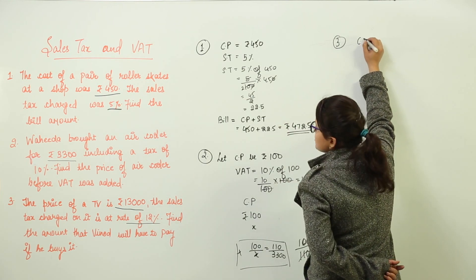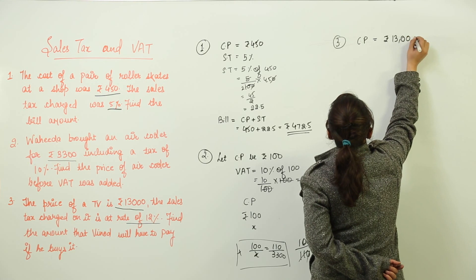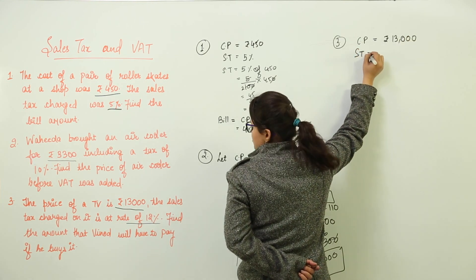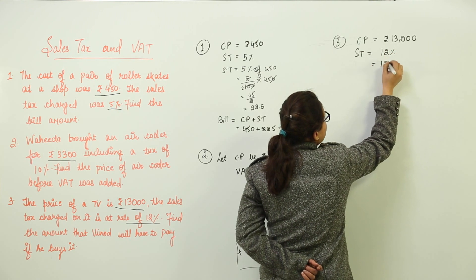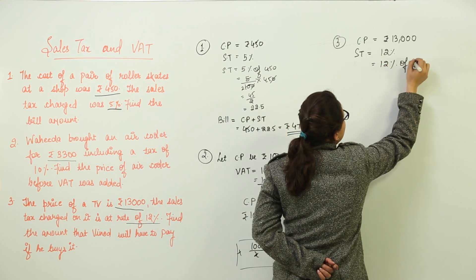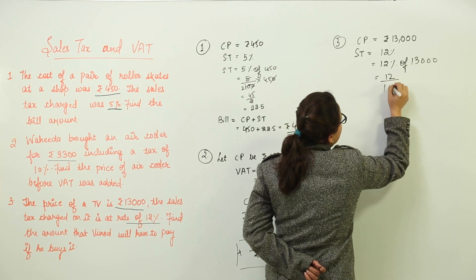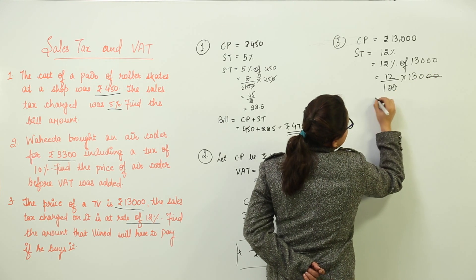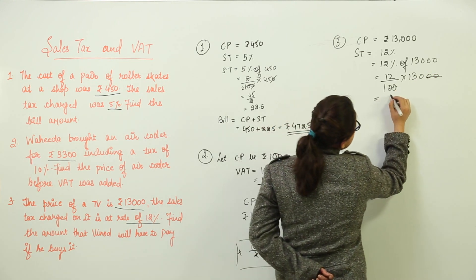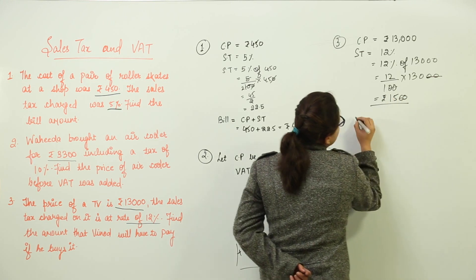That's simple enough. We will write the cost price of TV, that is equal to ₹13,000. We have the sales tax percentage also, which is 12%. So while calculating sales tax, we will do 12% of 13,000. That will be equal to 12 upon 100 into 13,000. The zeros get cancelled. We get the sales tax as ₹1,560.